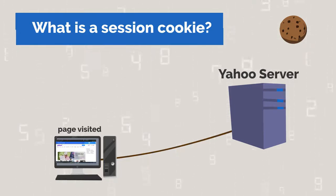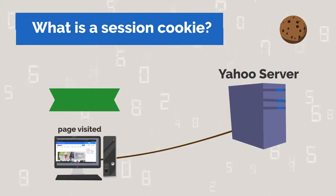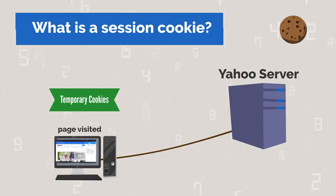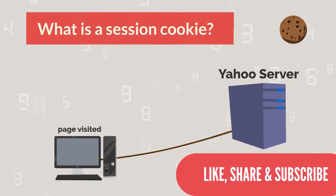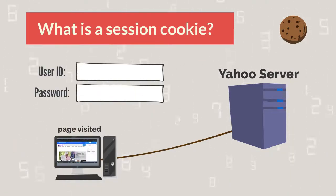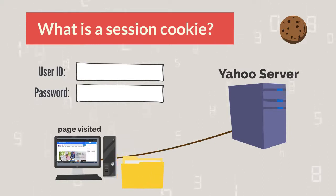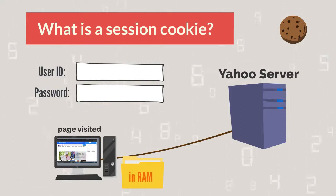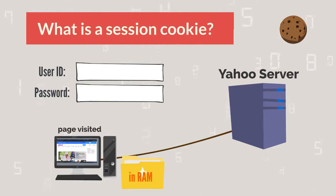Session cookies are also known as transient cookies, non-persistent cookies, or temporary cookies. If you have to log in to a website every time you open your browser and visit it, then it is using a session cookie to store your login credentials. Session cookies are stored only in RAM while the user is logged in. As soon as the user logs off from the site, this cookie is destroyed.